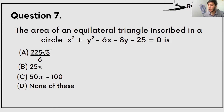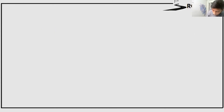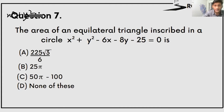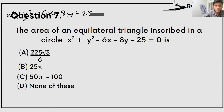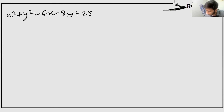Our circle equation is x² plus y² minus 6x minus 8y minus 25 equals 0. We need to find the center coordinates and radius. Rearranging, we get x² plus y² minus 6x minus 8y plus 25 equals minus 25, sorry — we work with the standard form.